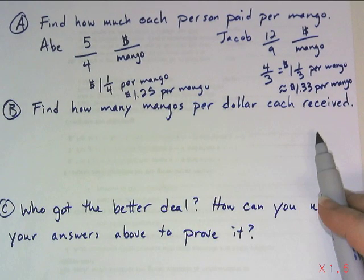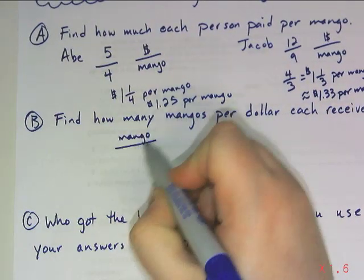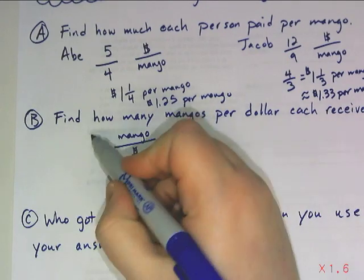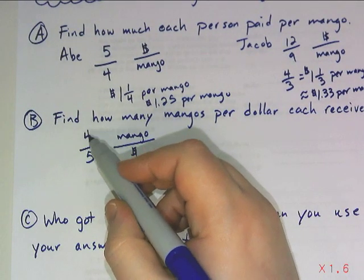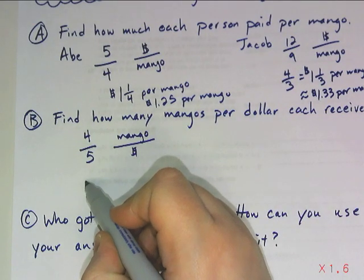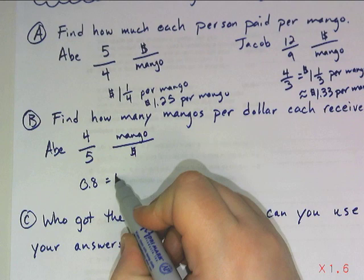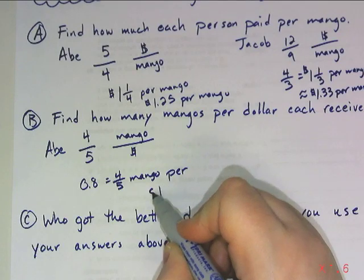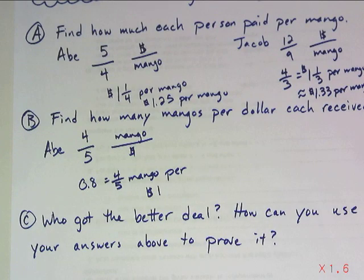So how many mangoes per dollar did each person get? All right. So I want to know mangoes per dollar. That means I've got to flip my previous rates upside down and get the reciprocal. So 4 mangoes over $5. So again, I can't really simplify this, but I can do the division. I can do 4 divided by 5 and get 0.8 for Abe. Or I can leave it as 4/5 and realize that means he gets 4/5 of a mango per dollar. So he doesn't get a whole mango for each of his dollars. He only gets 4/5 of a mango. In other words, 0.8 mangoes per dollar.